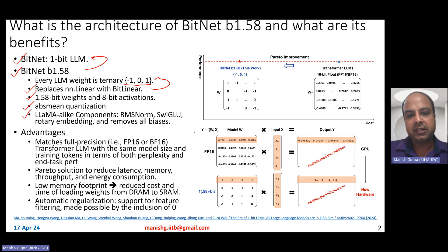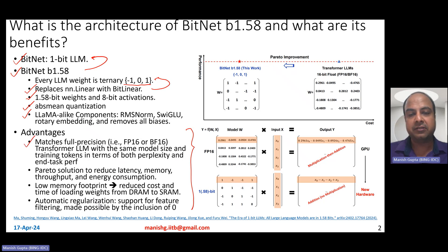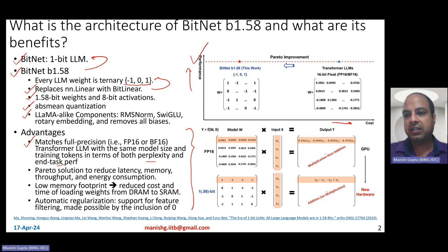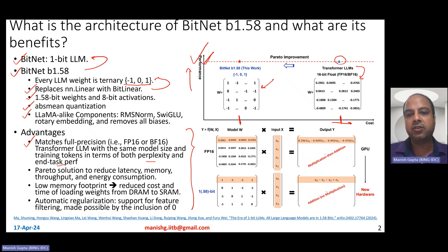So what are the benefits of this three-level quantized model? The benefits are huge. BitNet B1.58 models match full precision — meaning FP16 or BF16 transformer LLMs — with the same model size and the same training tokens, both in terms of perplexity and end-to-end task performance. Transformer LLMs with 16-bit weights incur way more cost compared to BitNet while maintaining the same performance. This can be called a Pareto improvement, which means you improve on memory, latency, energy consumption, and throughput while retaining the same model size.